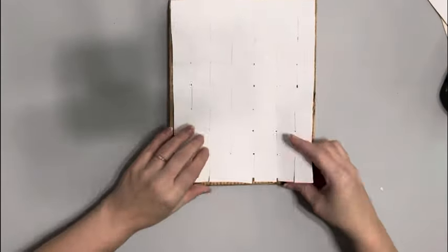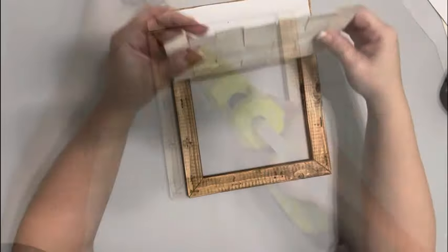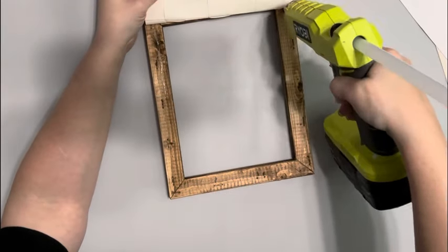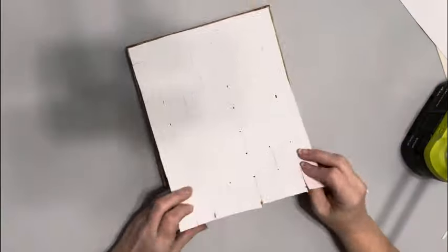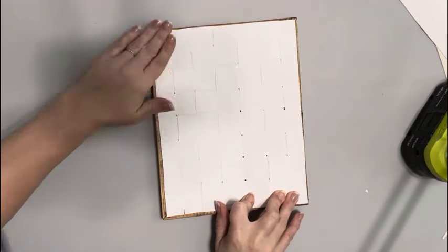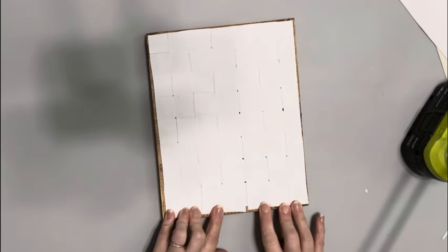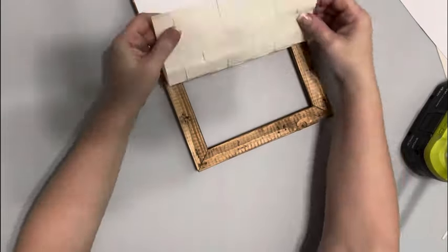And what I do is I hot glue that to the back of the frame. I start with the top and then flip it over, do a little bit of hot glue on the sides, and then pull it nice and tight. And continue that until I have it completely hot glued to the frame.